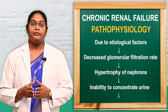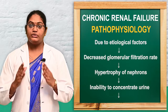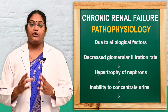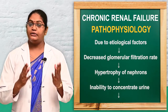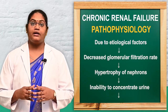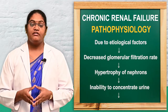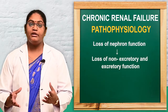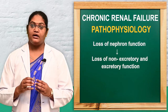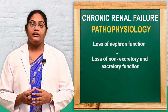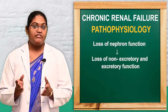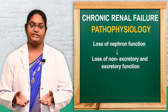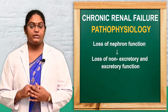Next we discuss the pathophysiology of chronic renal failure. Due to etiological factors, there is a decrease in the glomerular filtration rate. Reducing the glomerular filtration rate leads to hypertrophy of the nephrons. When hypertrophy occurs, that leads to the inability to concentrate urine, resulting in decreased and eventual loss of nephron function — both non-excretory and excretory functions are lost.